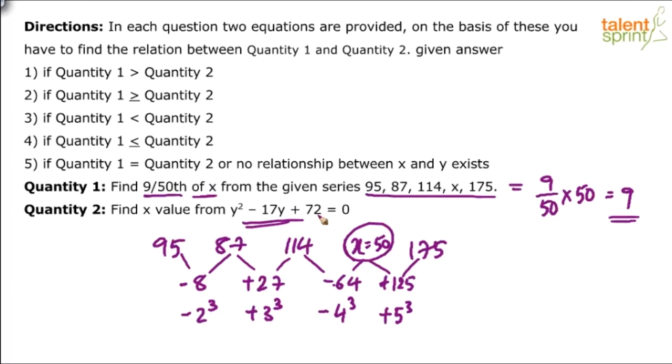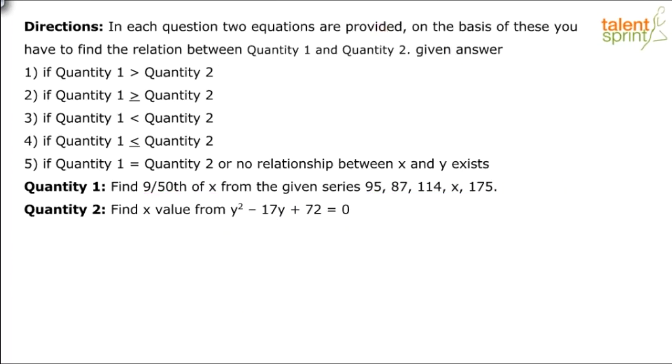Okay, so compare with y now. Find out y. Let me just clear this up. You know that x is equal to 9, or this is equal to 9. Let's find out about y. I guess this should be y. Find x value, find y value from y squared minus 17y plus 72 equals 0. So what do you think should be the answer?